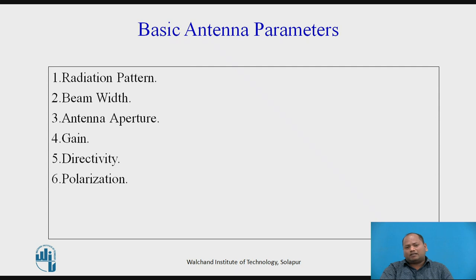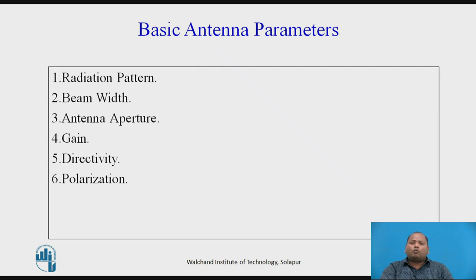Antenna gain is the property of the antenna which has the capability to produce a radiation pattern in an effective way. The gain of the antenna is measured in decibels.